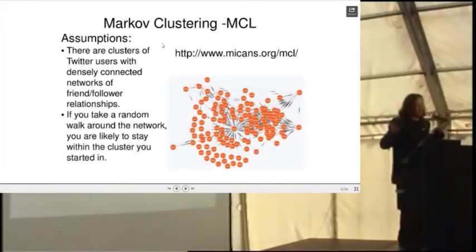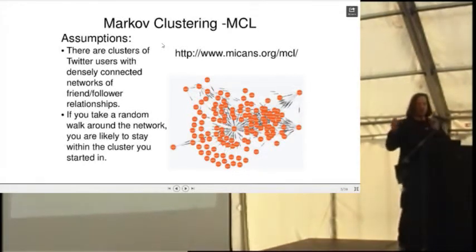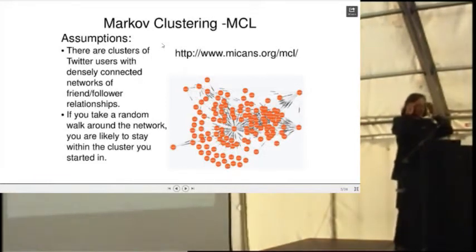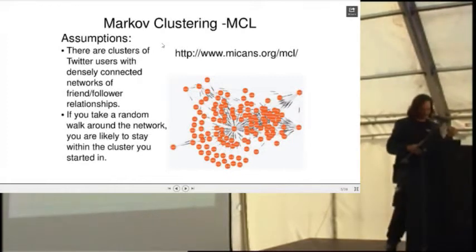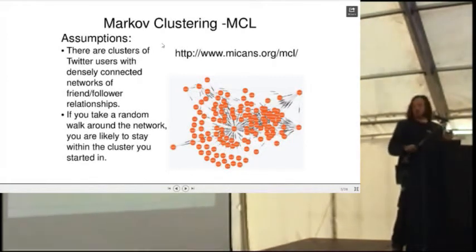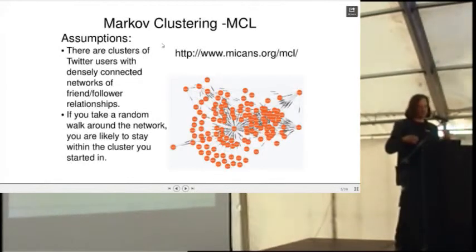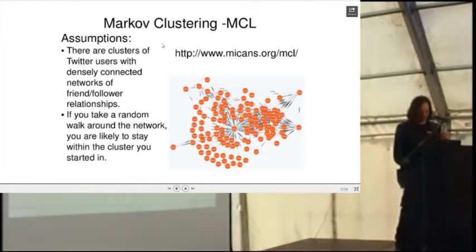Assumption the second: if you start somewhere on that graph and take a random walk around it, you are more likely to stay within your given tribe, your given cluster — and more likely to stay within the cluster in which you started. Now, do young Rewired State teenage hackers have more segregated follower networks than your middle-aged Python dev? We shall see. To find these clusters, we're going to use a technique called MCL.